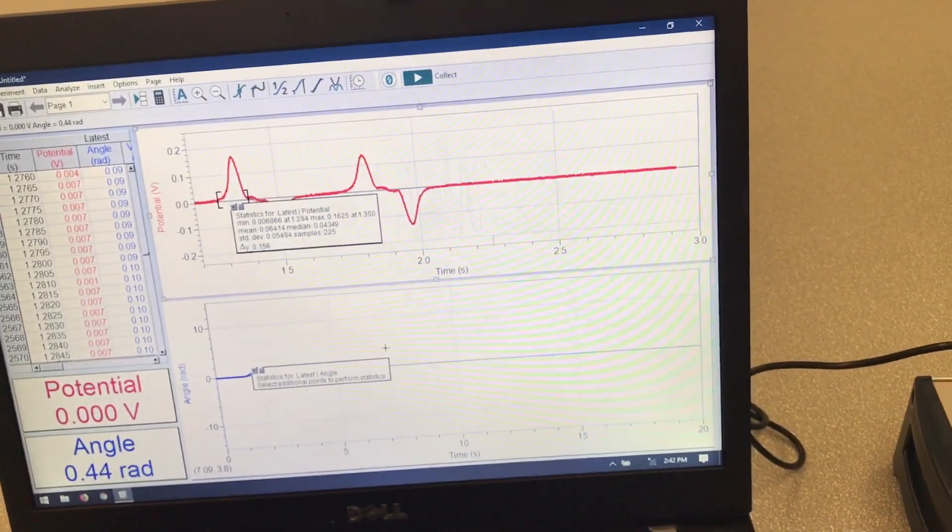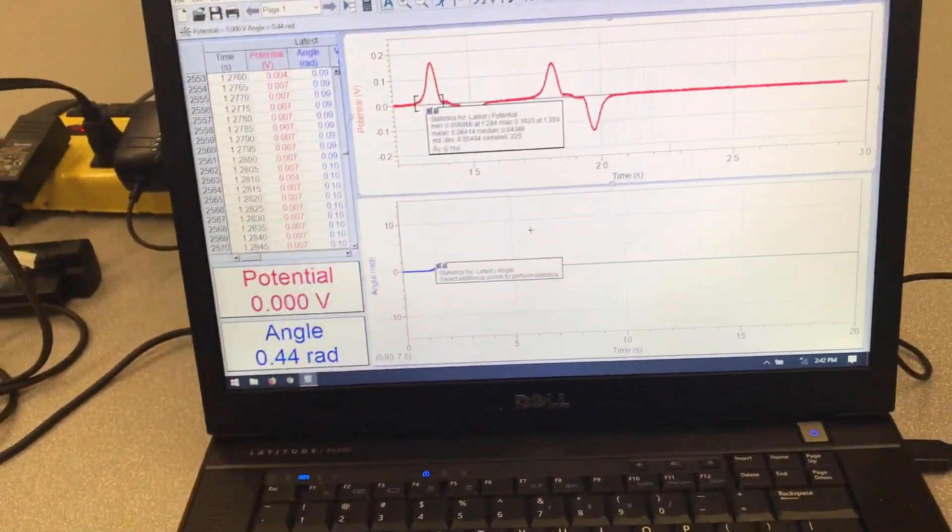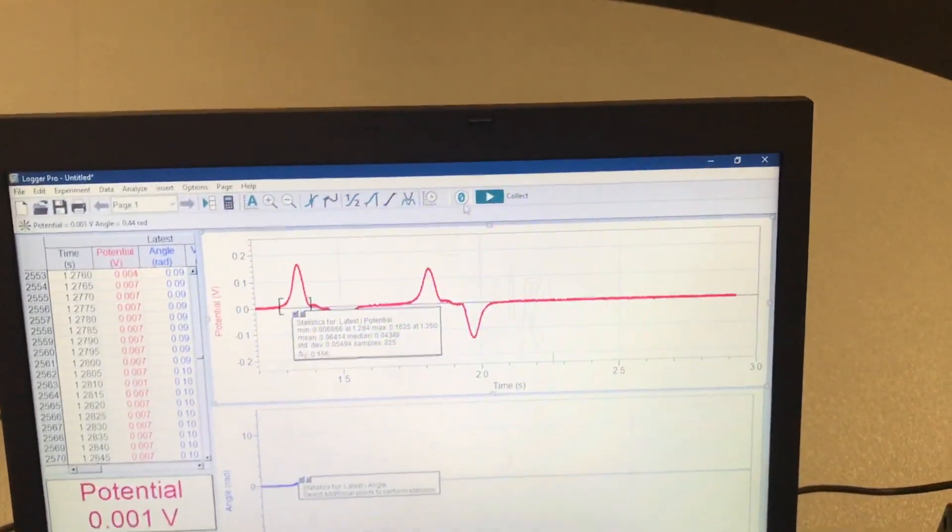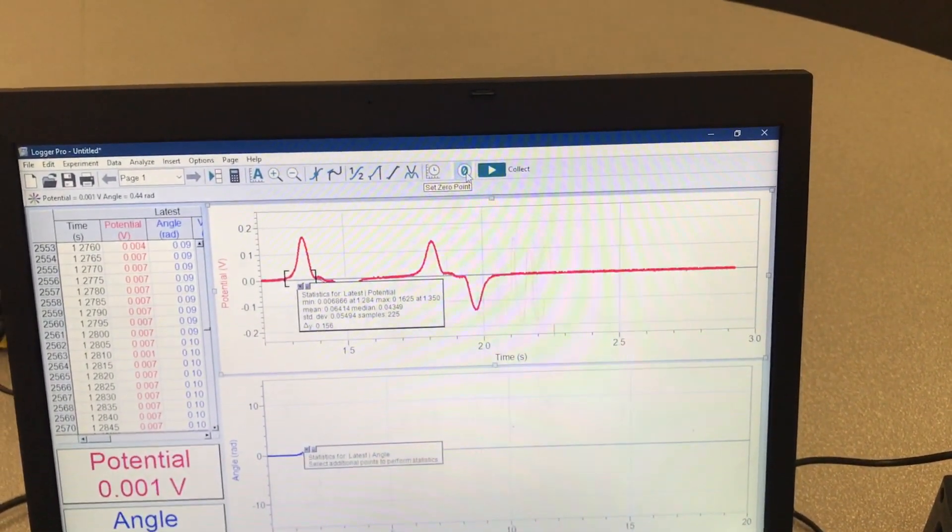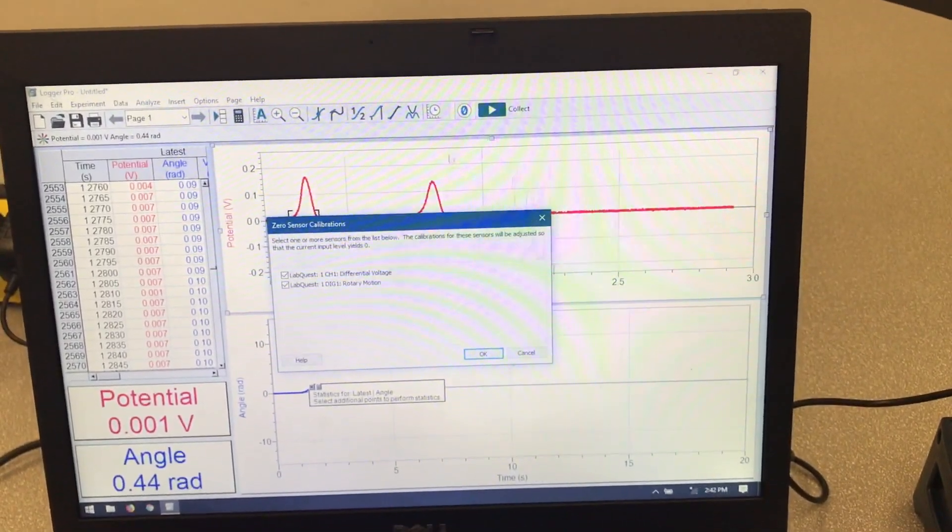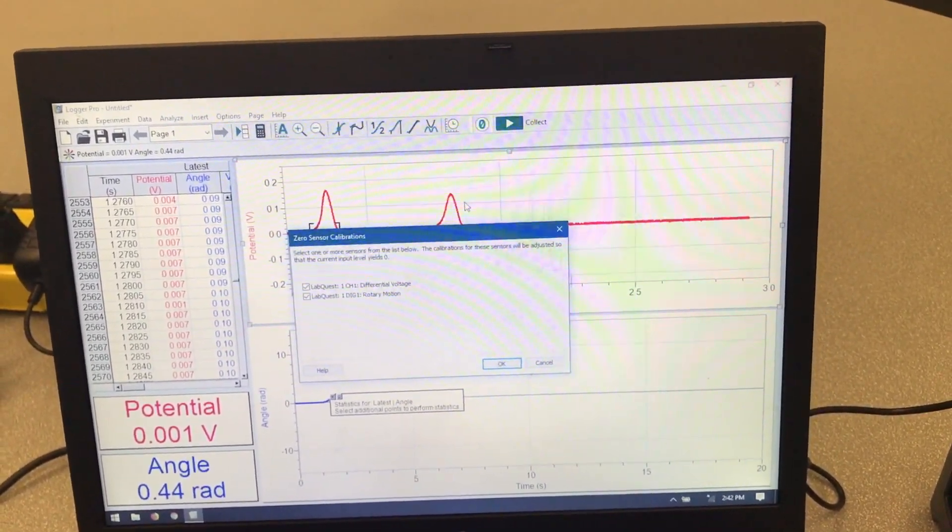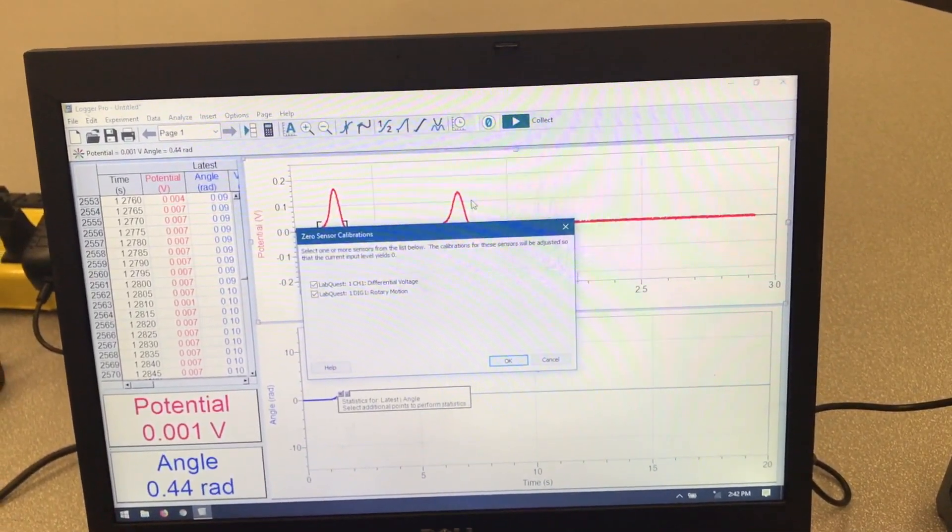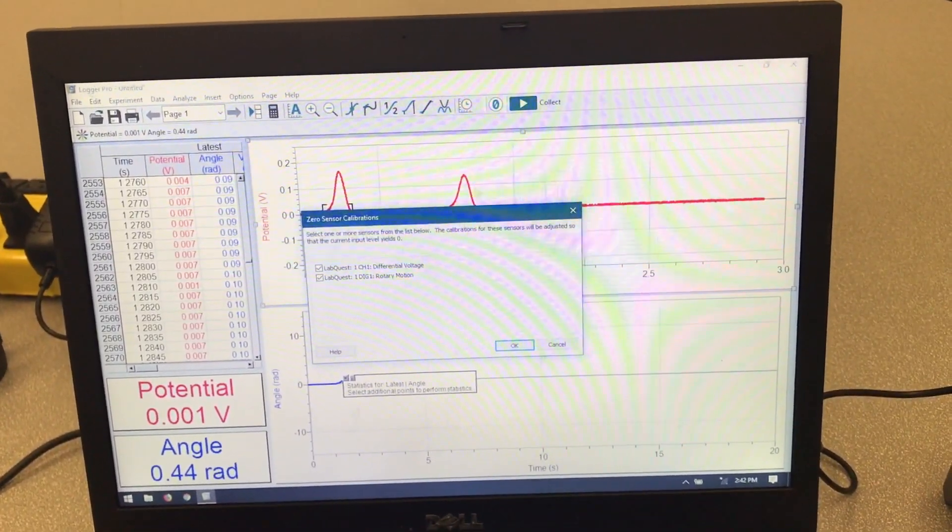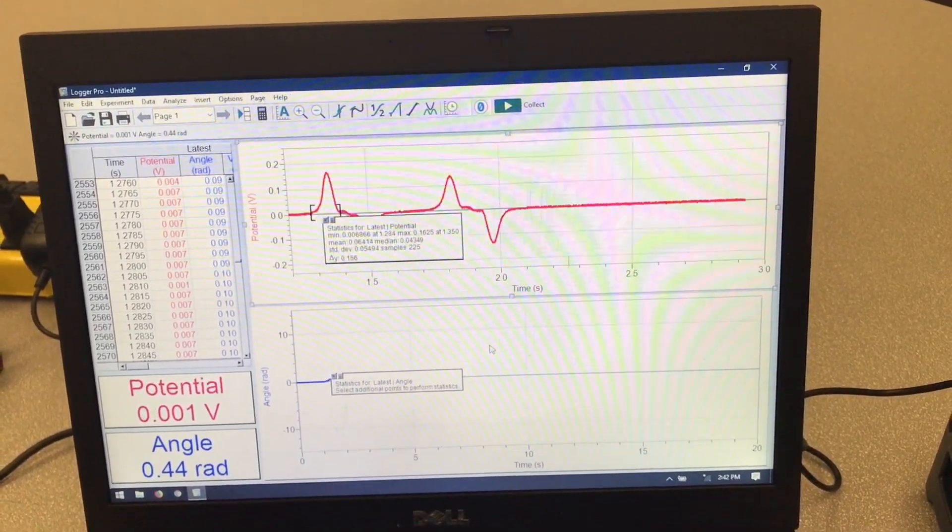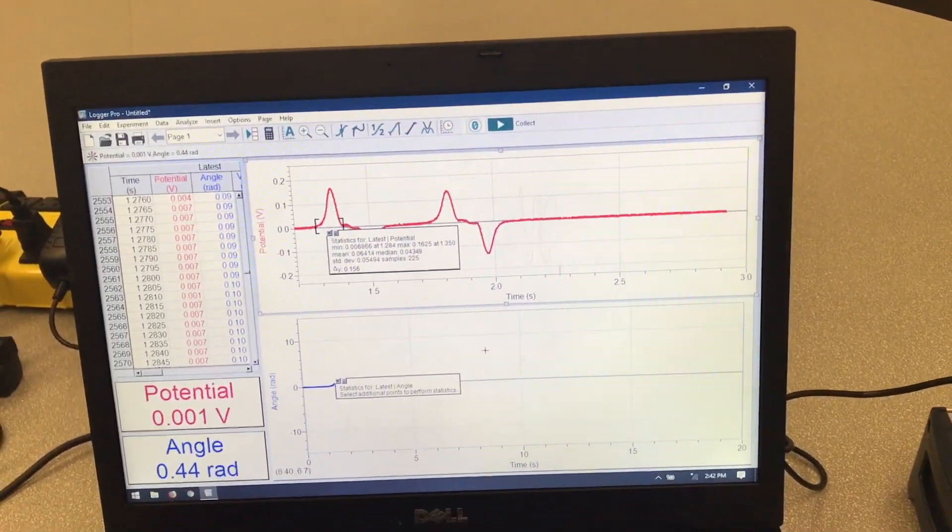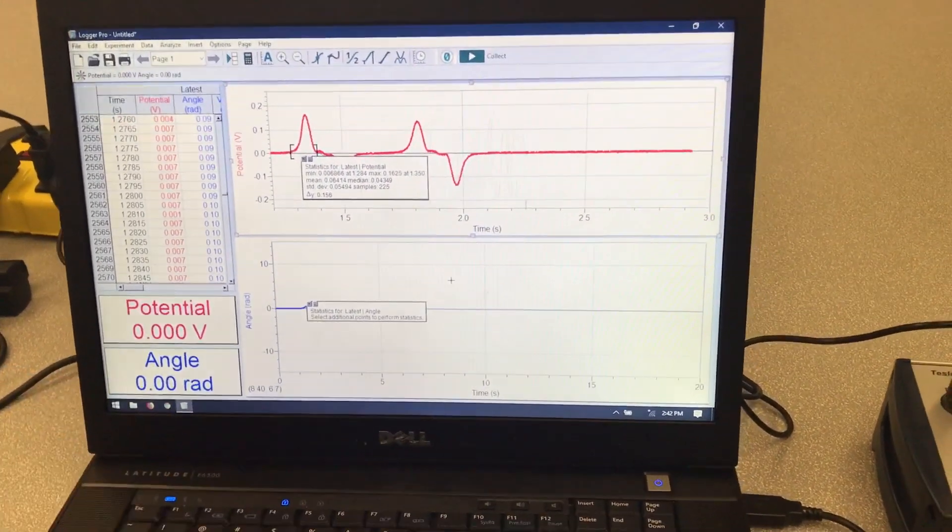We also want to make sure that these values here are zeroed. So in order to do that, we'll go up to this zero here, it's at zero point. We can do that for both sensors, the one's at equilibrium over here, the voltage should be reading zero, so now we can just okay. And that takes both of those numbers to zero.